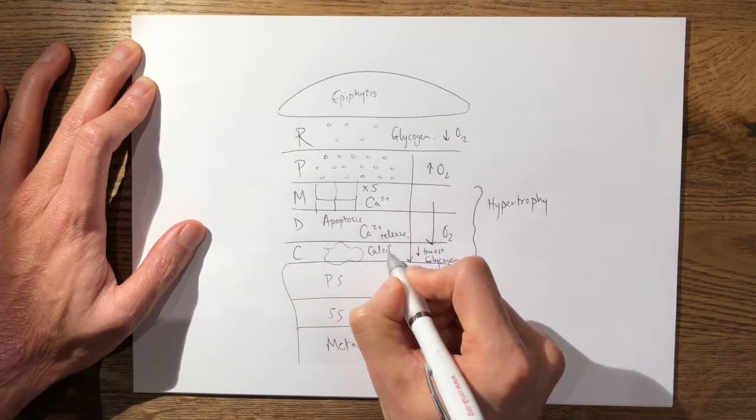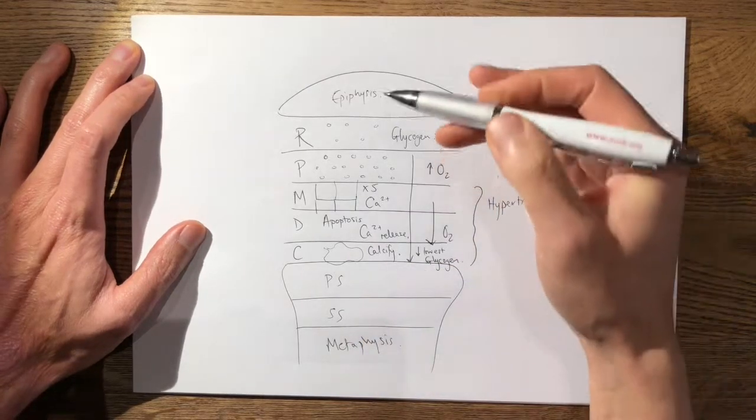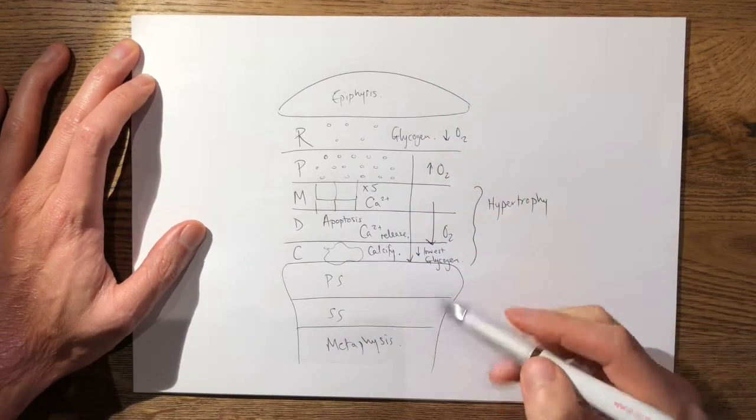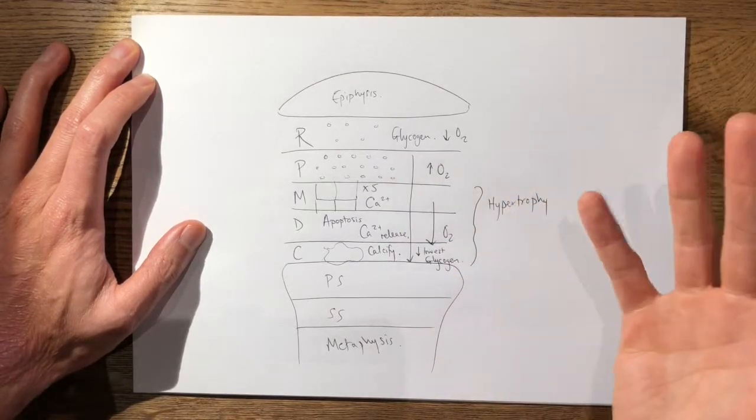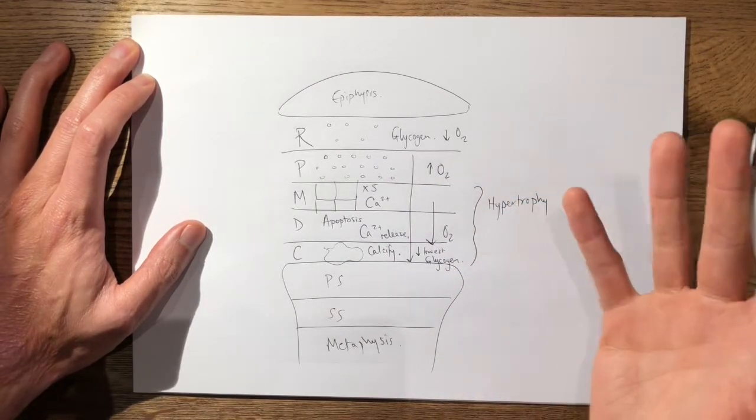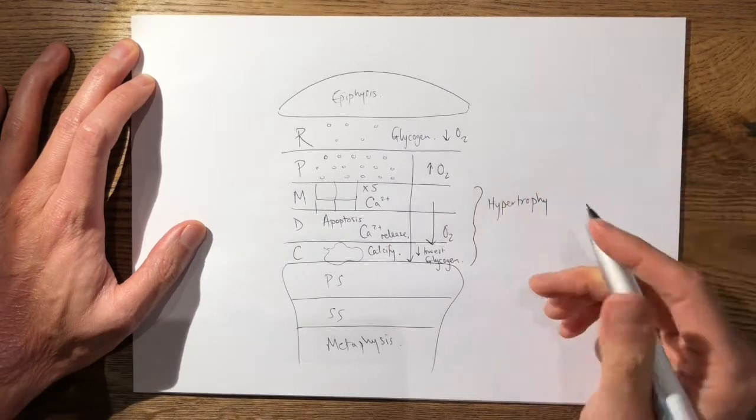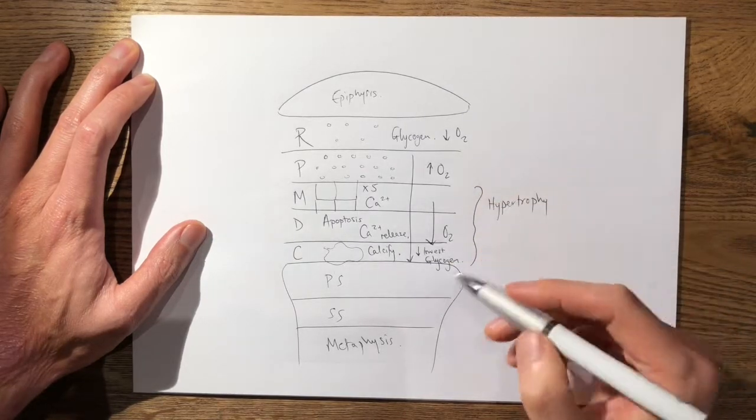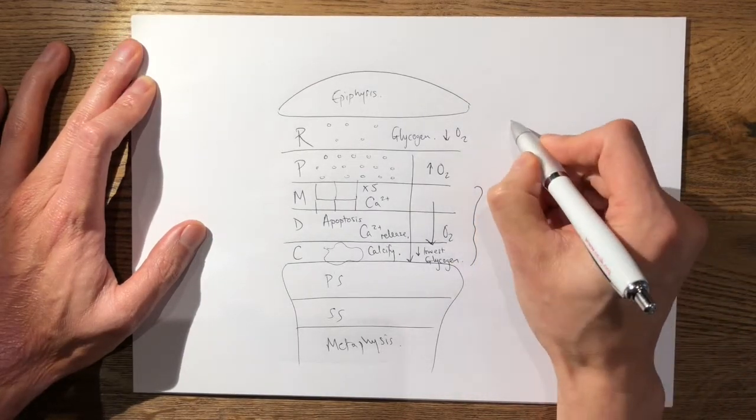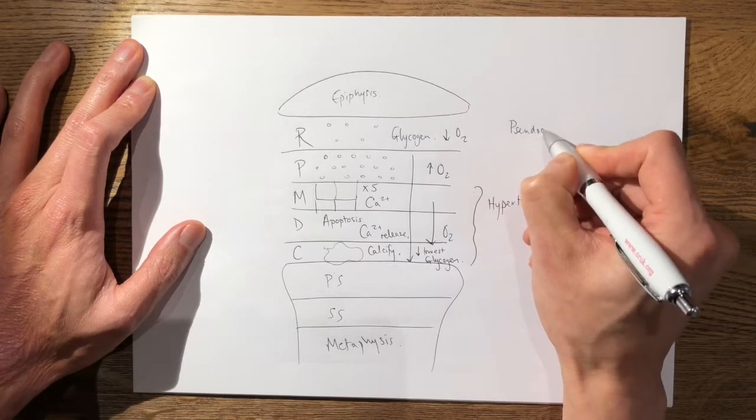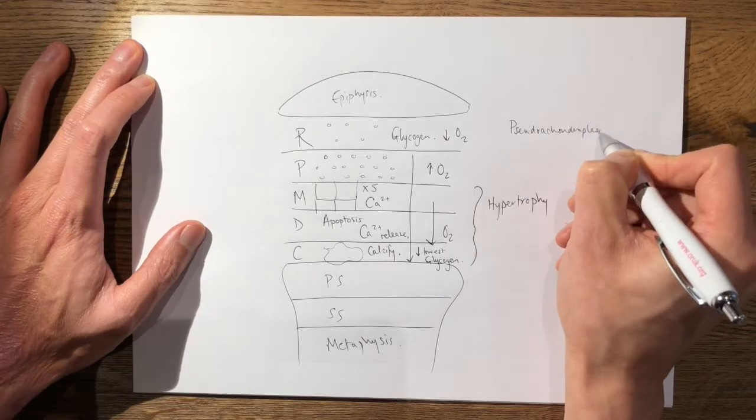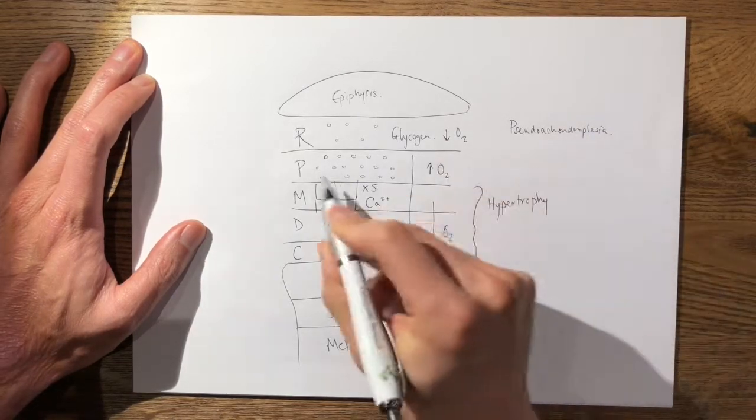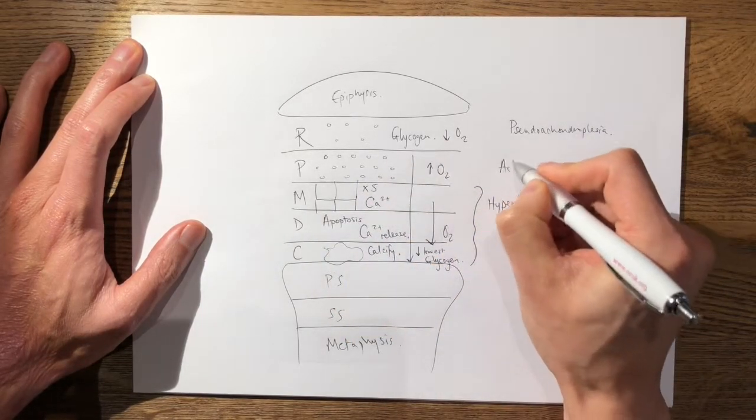So that's broadly speaking the growth plate. Now what particular conditions affect the growth plate? You largely only really need to know one or at most two conditions affecting each layer. Starting from the top you have pseudoachondroplasia, and then in the proliferative zone you have achondroplasia.